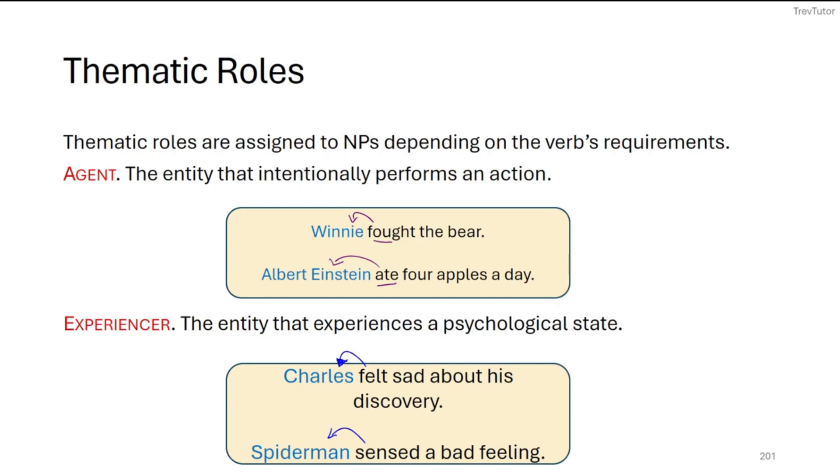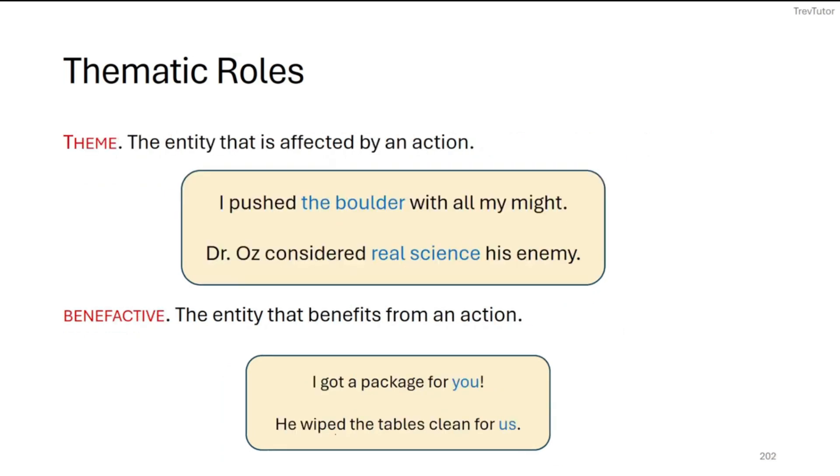So when you think about agents or experiencers, don't just think subjects. You need to think about the actual meaning of what the verb is looking for. Now theme is the general argument for things that are affected by actions. Usually direct objects are themes and that's pretty set in stone for most cases you'll encounter. So for I push the boulder with all my might, the boulder is the thing that is being pushed. This is the theme. Dr. Oz considered real science an enemy. The thing you're considering is the theme in this case—real science.